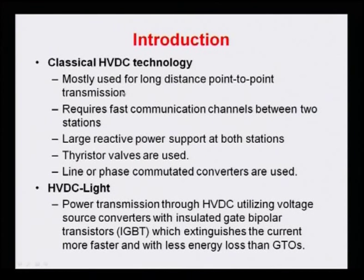To avoid all these problems of conventional HVDC, HVDC Light (or HVDC Plus — the trade name given by ABB and Siemens respectively) replaces the current source converters (CSC) with voltage source converters (VSC). Both technologies use the same concept. The basic change is that power transmission through HVDC now utilizes voltage source converters, and they use IGBTs — insulated gate bipolar transistors.